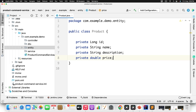Add the Kafka dependency to both the query and command microservices. Then configure Kafka-related properties. The command service will act as a producer and the query service will act as a consumer. Define the server where Kafka is running, and specify the serialization type as JSON for both producer and consumer. Copy the configuration to the command service properties file, keeping only the producer configuration.